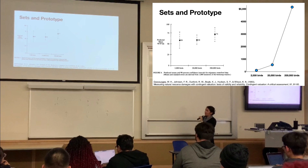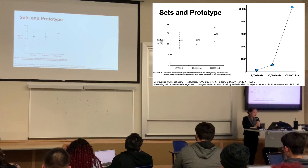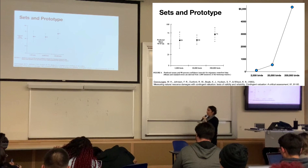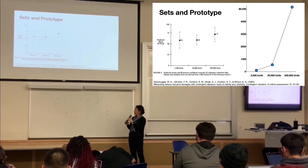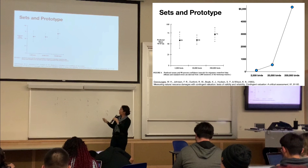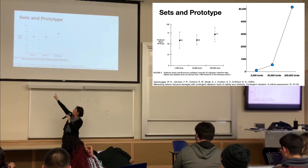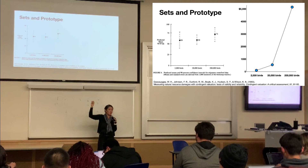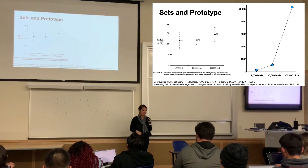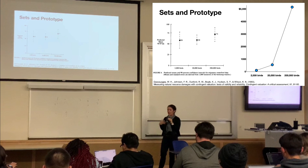They asked people: how much would you spend to save 2,000 birds, 20,000 birds, or 200,000 birds from an oil spill? On average, people would spend $59 to save 2,000 birds, also $59 to save 20,000 birds, and then $71 on average to save 200,000 birds.